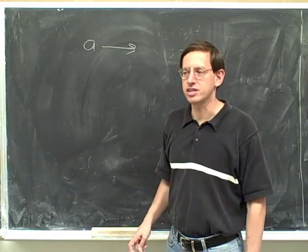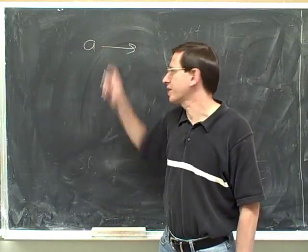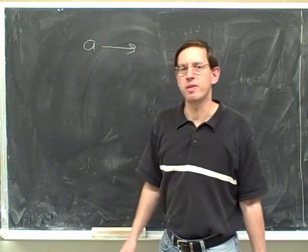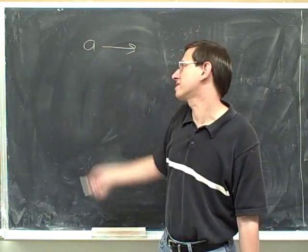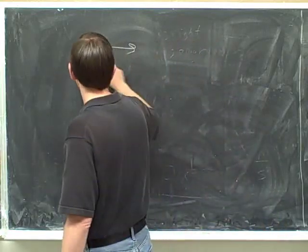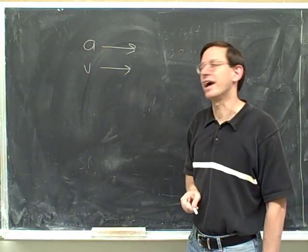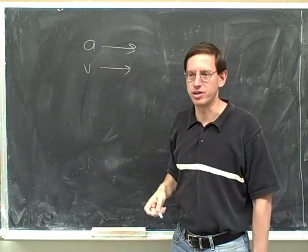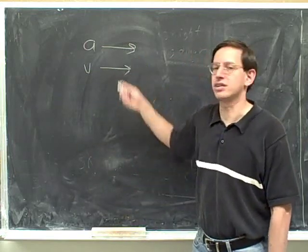Remember that the acceleration doesn't tell you which way you're moving — it tells you whether you're speeding up or slowing down. Is this object speeding up or slowing down? We can't tell that either, because you can't really interpret the acceleration without comparing it to the velocity. Since I haven't told you the velocity, we can't get much out of this at all. We don't even know whether we're speeding up or slowing down. Now can you tell? Now we know we're speeding up. You really need both the acceleration and the velocity to tell whether you're speeding up or slowing down.